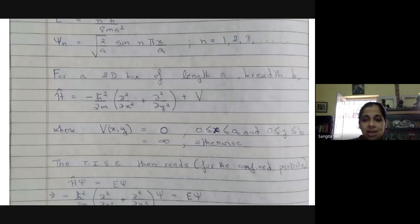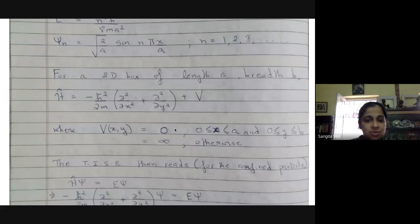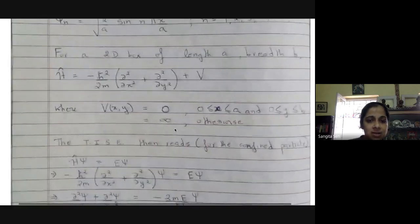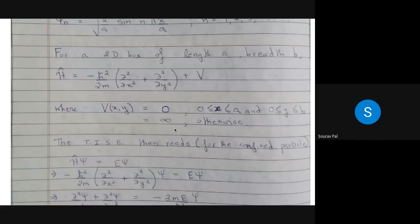When x lies between 0 and a and y lies between 0 and b, then the potential is set to zero, and otherwise it is infinity.